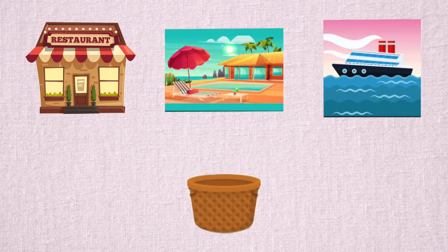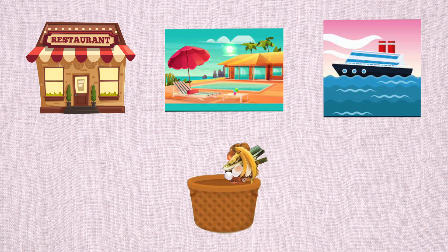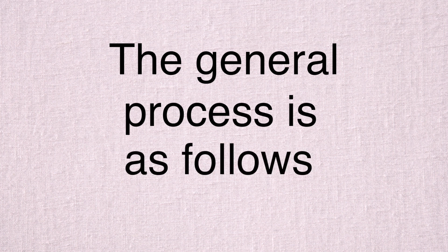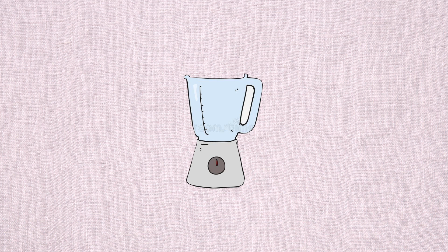In order to obtain activated carbon, the food waste must first be collected. This food waste, which is our starting carbonaceous material, must then be processed into pure carbon. The general process is as follows: first, the organic matter will be dried and pulverized to ensure effective processing.